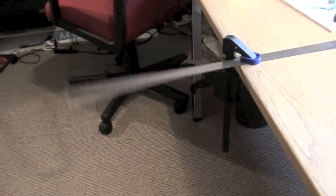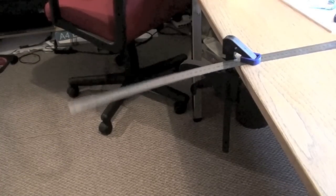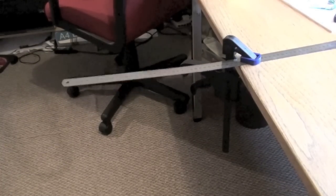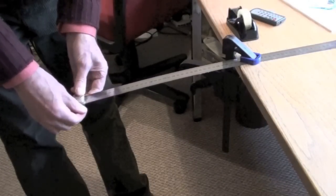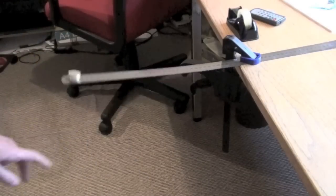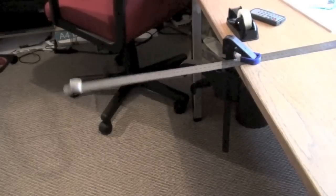Almost every child must have annoyed almost every teacher by twanging a ruler over a desk. This simple example of simple harmonic motion could be modified by adding weights to the end of the ruler, when it vibrates a lot more slowly.